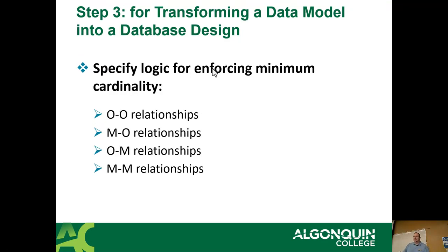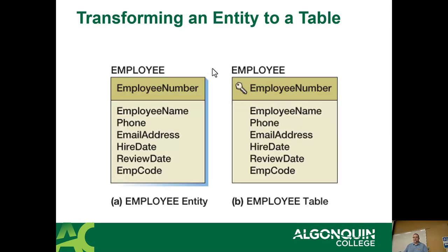You're going to specify logic for handling minimum cardinality — one-to-one, many-to-one, many-to-many. On the left is a conceptual table, on the right is a normal table — the only difference is a primary key has been defined. In the conceptual diagram, employee number is a candidate key — it's an identifier — but when it becomes the table, it is marked as a primary key.